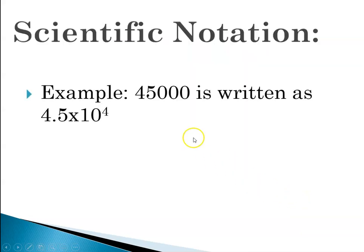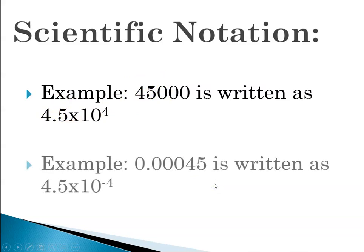So I'm going to give you a couple examples. So here, 45,000 is written as 4.5 times 10 to the 4. Notice this number had two significant figures and that number has two significant figures. Here, 0.00045 rewritten 4.5 times 10 to the minus 4. Two sig figs. Two sig figs.